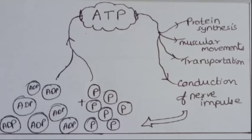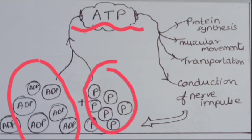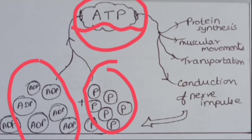Now let us talk about ATP, which we call the energy currency of a cell. ATP stands for adenosine triphosphate — meaning three phosphate molecules are attached. When glucose breaks down and energy is produced in the body, that energy is stored when ADP molecules react with inorganic phosphate to form ATP. ADP stands for adenosine diphosphate.